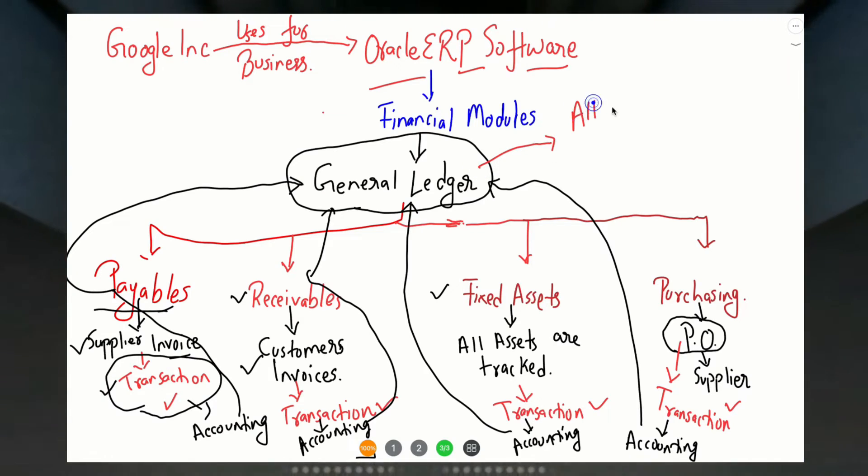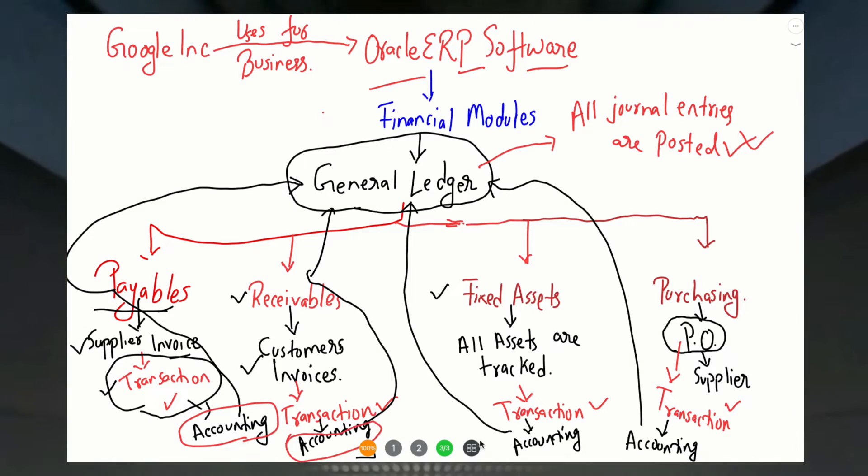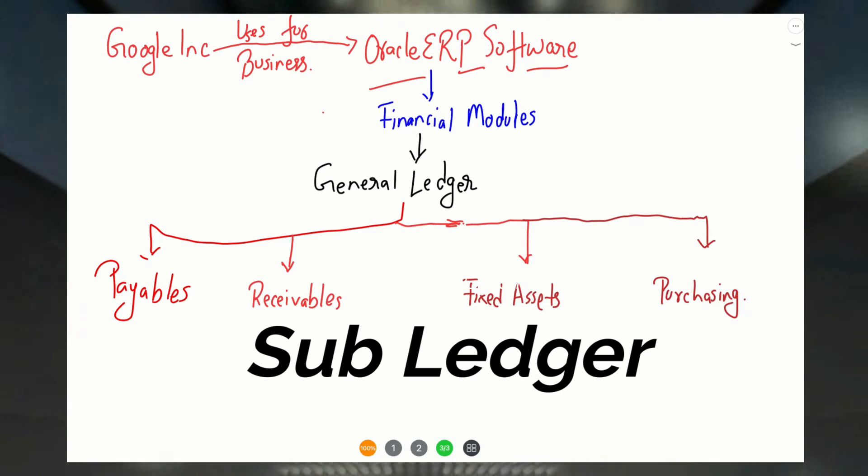So this understanding must be clear: whatever transactions we are creating in respective modules, those transactions' accounting entries will be generated and transferred to the journal ledger module. So in the journal ledger module we have journal entries from all the different modules — journal ledger is the main hub where all the accounting entries from different modules come, and finalized accounting entries will be seen in the journal ledger.